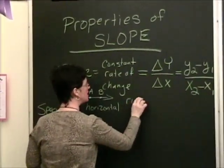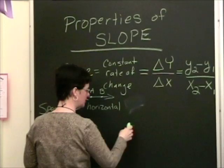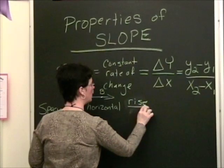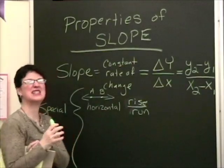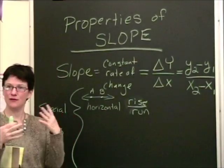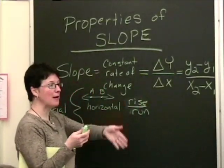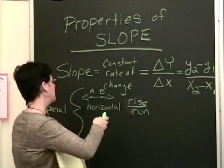We also mentioned yesterday rise over run. This is kind of a slang, if you will, for these formal symbols, the rise over the run. Just got to remember that rise can be a downward rise, so to speak, as well, if that's possible.